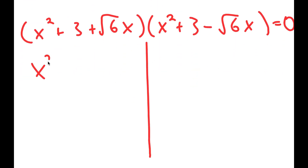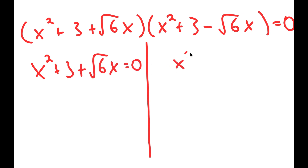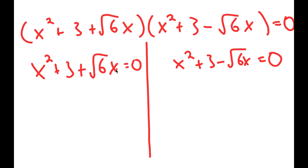So this gives me two equations. I have x squared plus 3 plus the square root of 6 times x is equal to 0, and x squared plus 3 minus the square root of 6 times x equals 0. For both of these, because both are quadratic equations, you can use the quadratic formula to solve them. I'm actually not going to do that in the video, but you can try that yourself.